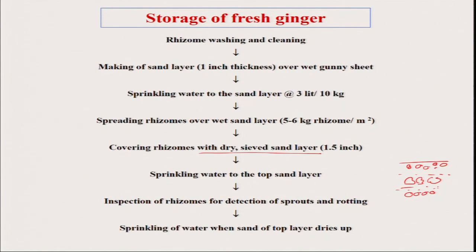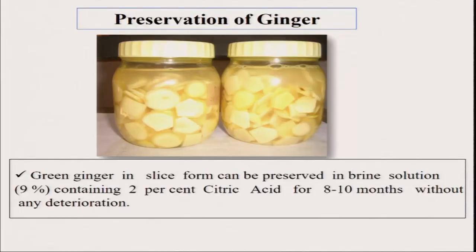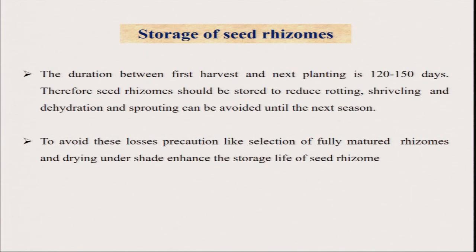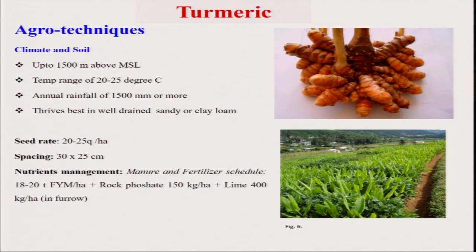For storage of fresh ginger rhizomes — every farmer does not have cold storage capacity or the ability to immediately sell in the market. After rhizome washing and cleaning, you can make a sand layer in a pit, spread rhizomes at 5 to 6 kg per square meter, and cover again with a sand layer — alternating layers of rhizome and sand up to the top layer — so we can store ginger under our own conditions without purchasing any additional facility. For preservation, you can make slices and store ginger without inorganic preservatives — using citric acid for preservation.